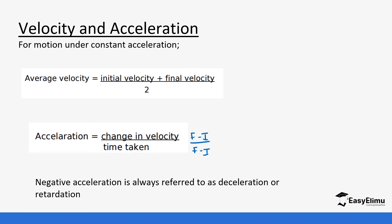Negative acceleration is always referred to as deceleration or retardation. You will also see that a lot — it will come up in our velocity-time graphs.